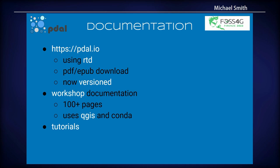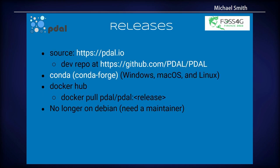We have new documentation now done using Read the Docs, which provides a full PDF or EPUB download, and the docs are now versioned. We have a full workshop available using QGIS and Conda, and several tutorials available. Releases will be at poodle.io. We have a dev repo on GitHub. Most binaries will be distributed through Conda — that's our primary way for distributing binaries. Binaries are still available through Docker but no longer available in Debian, as we are without a maintainer. If somebody wants to step forward and maintain Poodle in Debian, let us know.